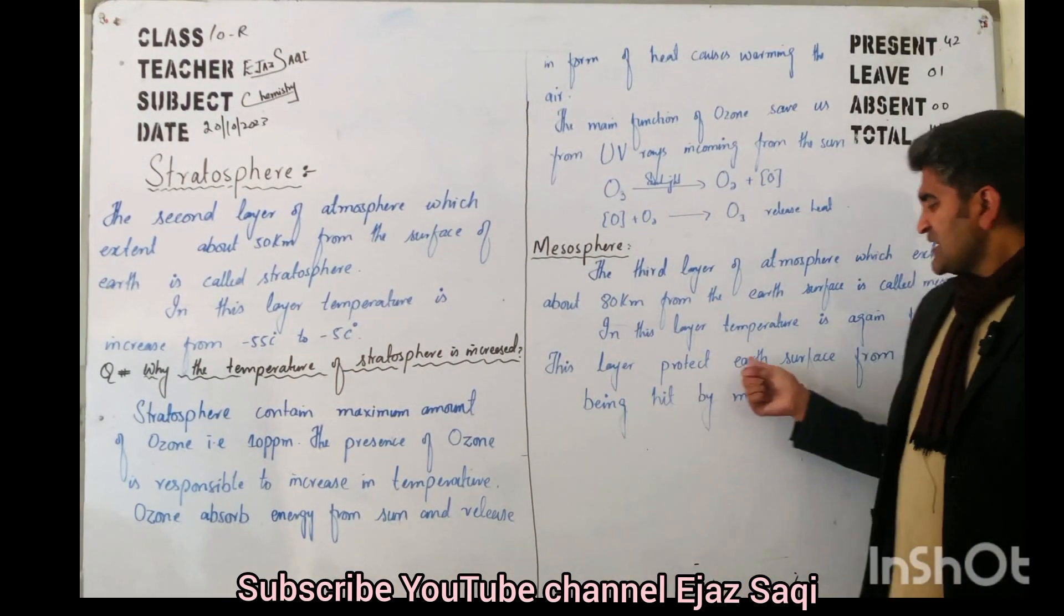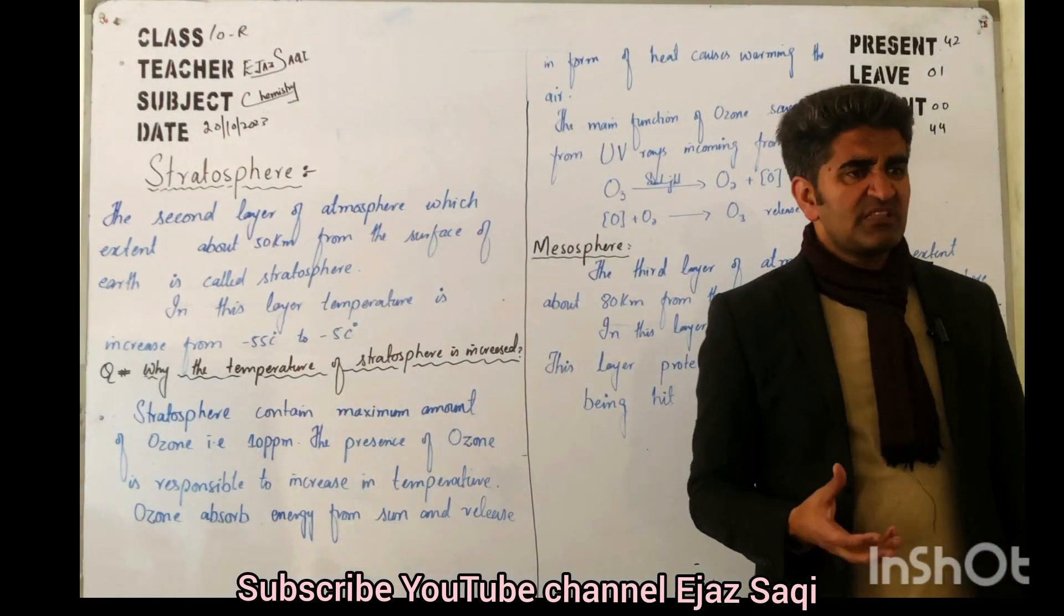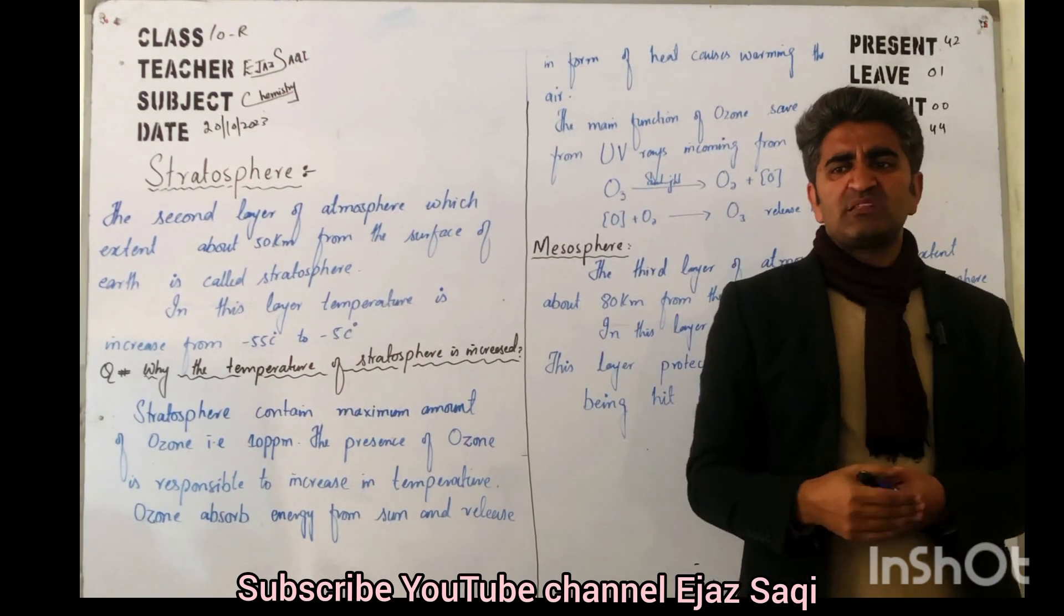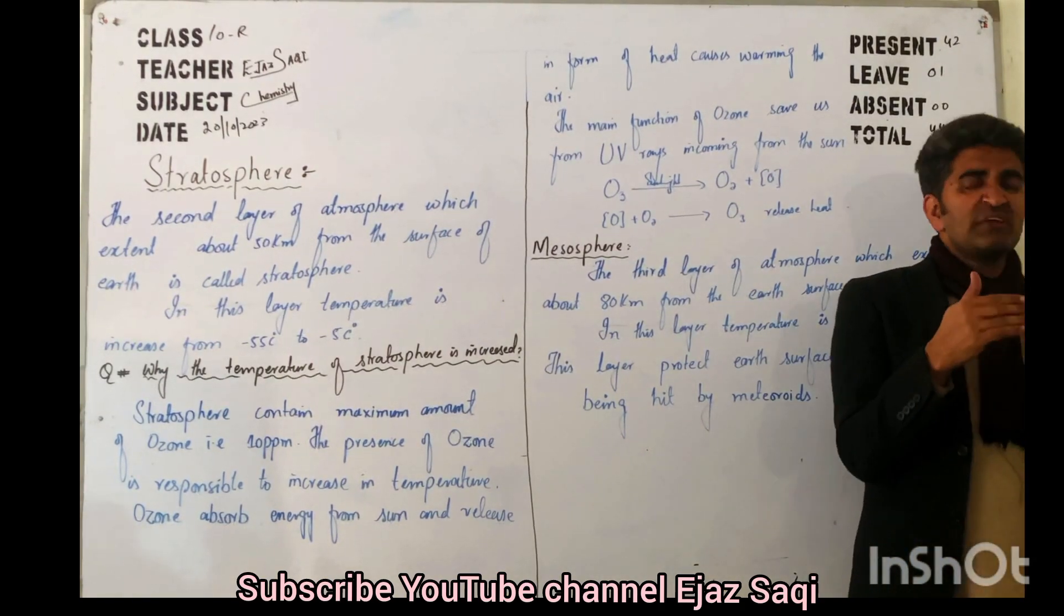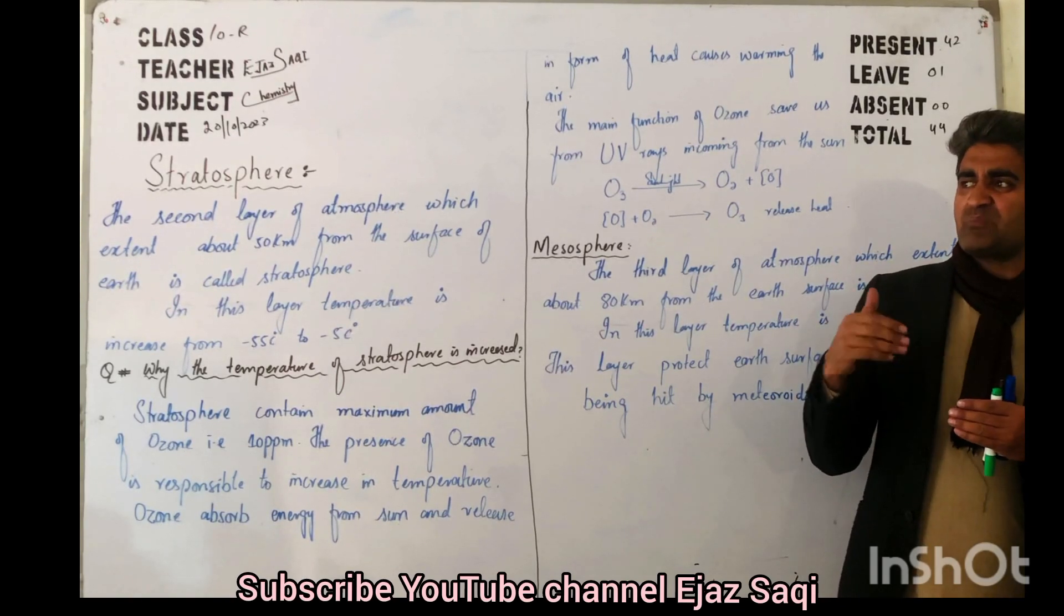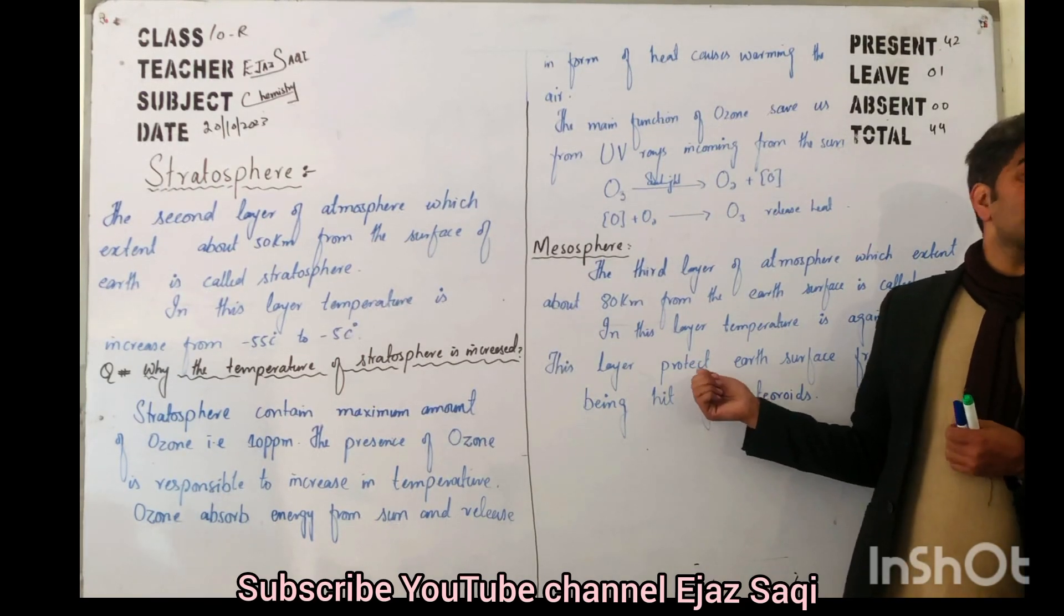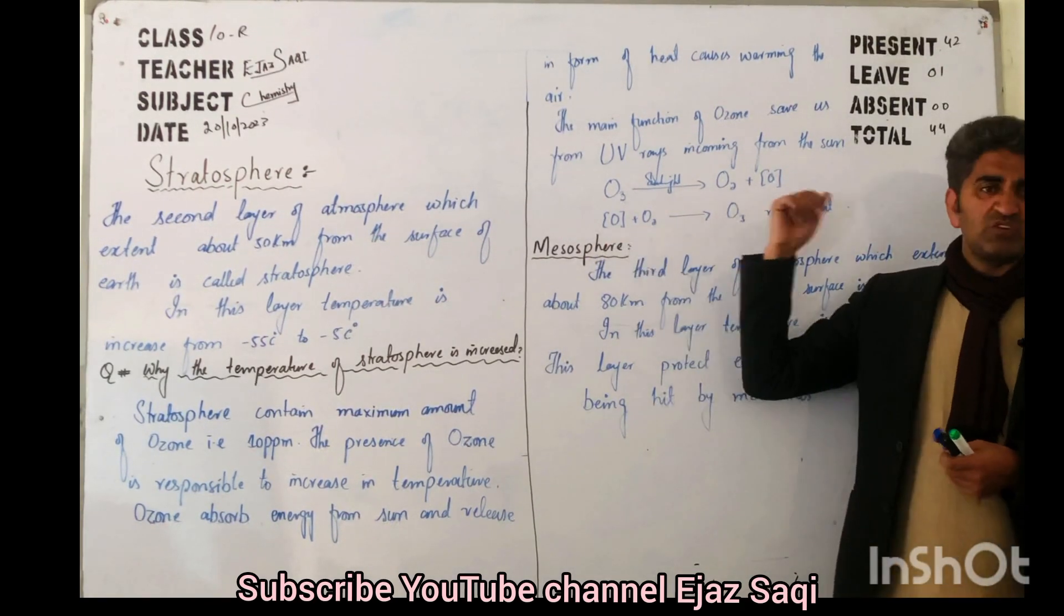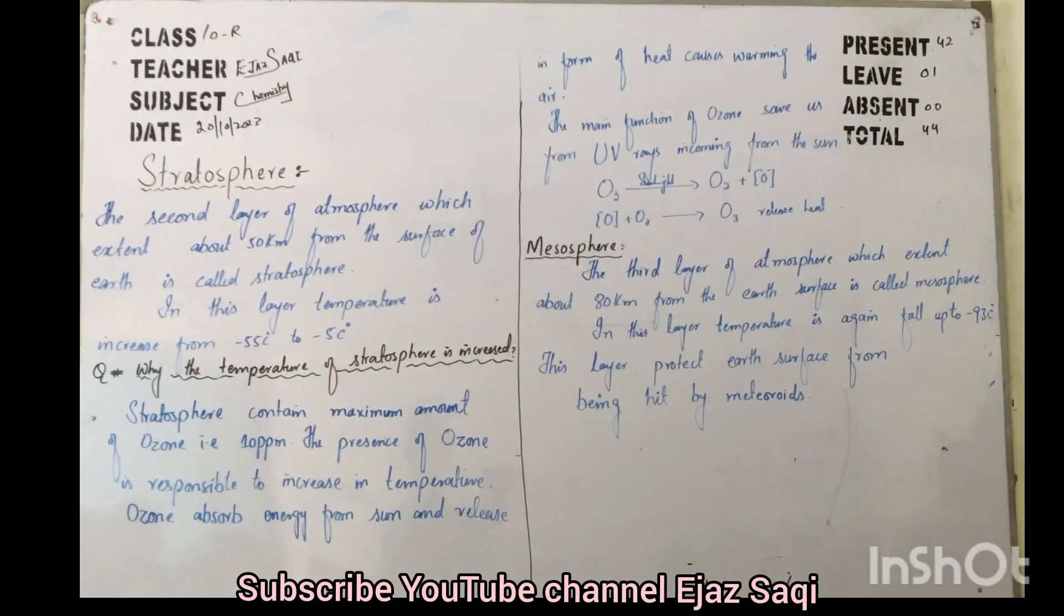In this layer, what happens? These meteorites, shooting stars as they are called, break apart. They come towards Earth's surface. So what does mesosphere do? Before they reach Earth surface, before hitting Earth surface, what happens to them? They get destroyed. So it protects Earth surface from meteorites. This is the main function of mesosphere.